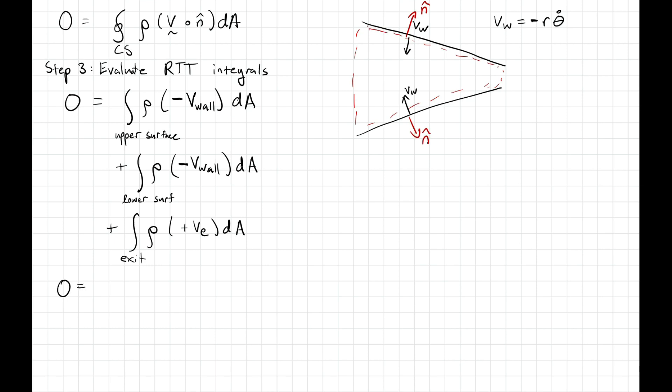Note that the two upper integrals are actually exactly the same integral, basically because they're just a mirror image of one another. So I actually only have to perform the integral once and then just multiply it by two. So if I look at what that integral is, I'm basically integrating the wall velocity, which is locally minus R theta dot, inside that integral.